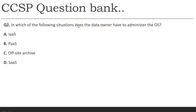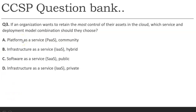Second scenario: In which situation does the data owner need to administer the operating systems? We have seen that in SaaS you manage nothing beyond data; in PaaS you manage application and data; only in IaaS do you manage the virtual machine operating systems. The answer should be IaaS. The question bank answer is marked as C — identity as a service — but the correct answer based on the concept is IaaS.